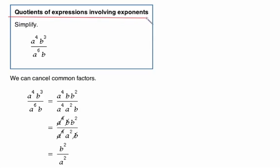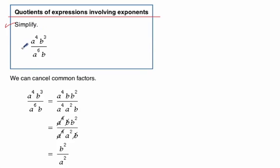Alright, looking at quotients of expressions involving exponents. The directions are just to simplify. What we've got is a nice little fraction here — we all love fractions, not! That's okay, don't worry about it. We have a to the fourth b to the third over a to the sixth b.